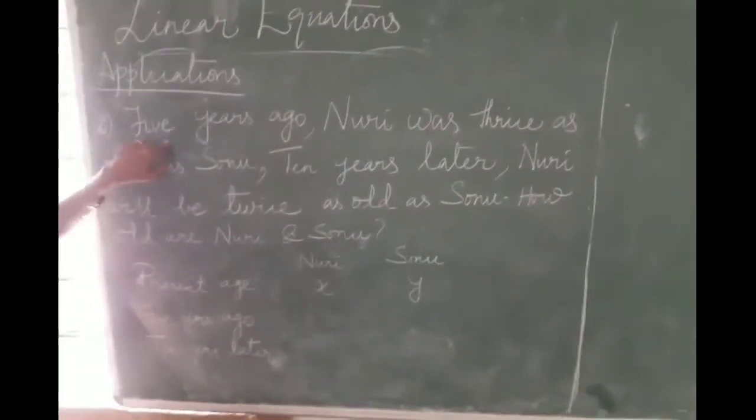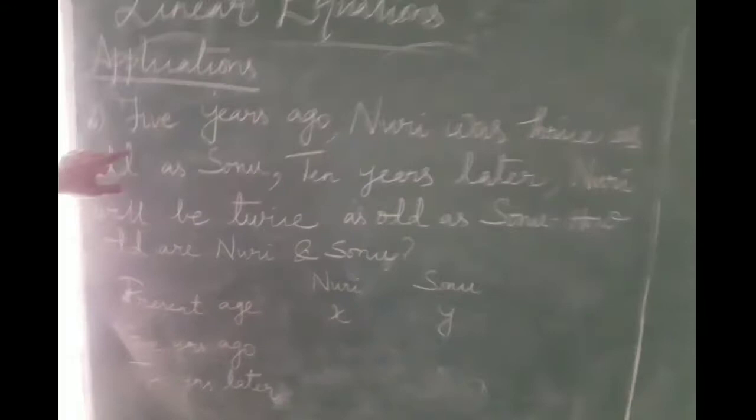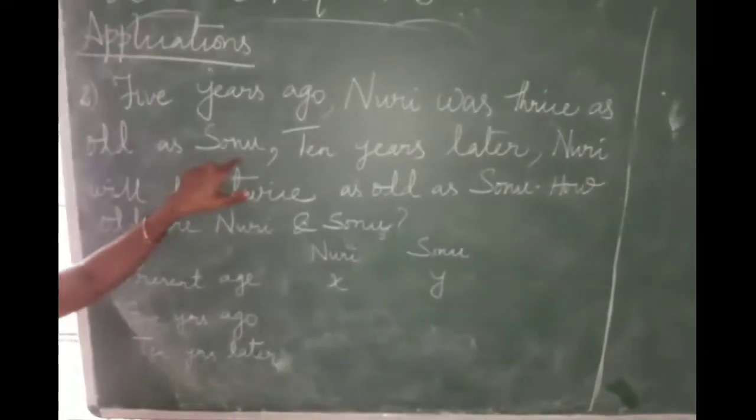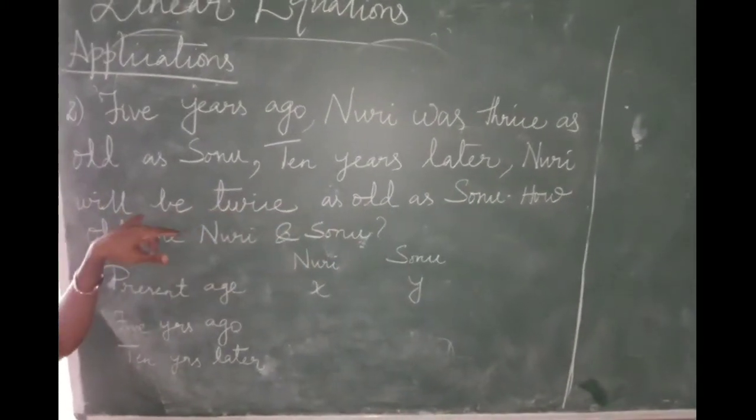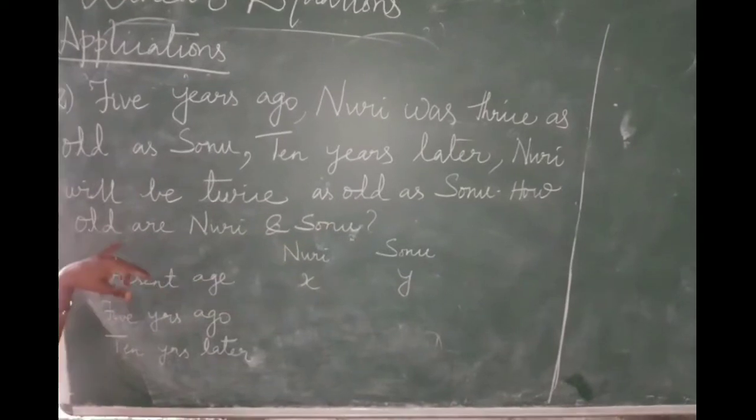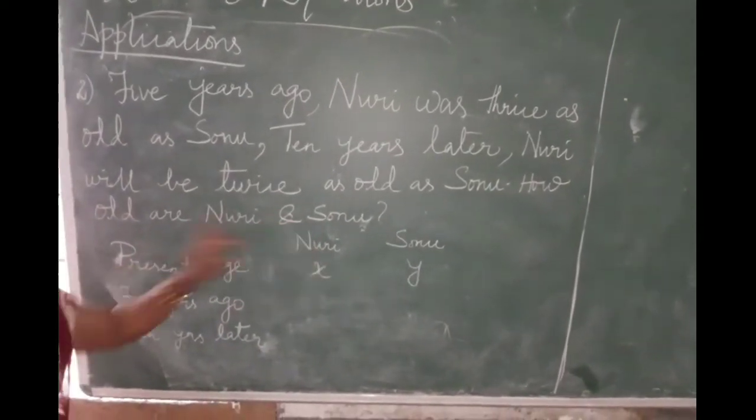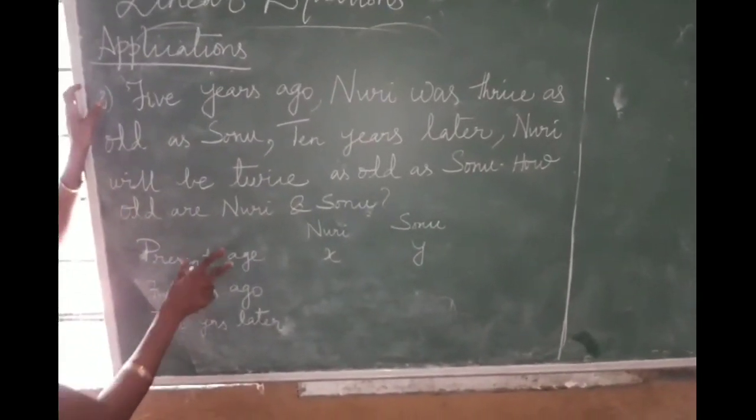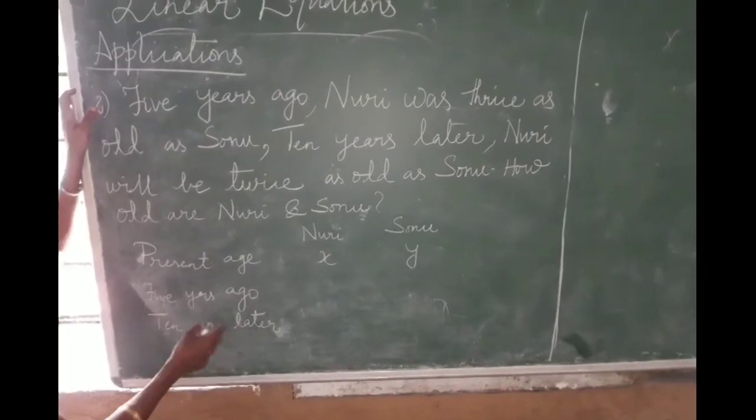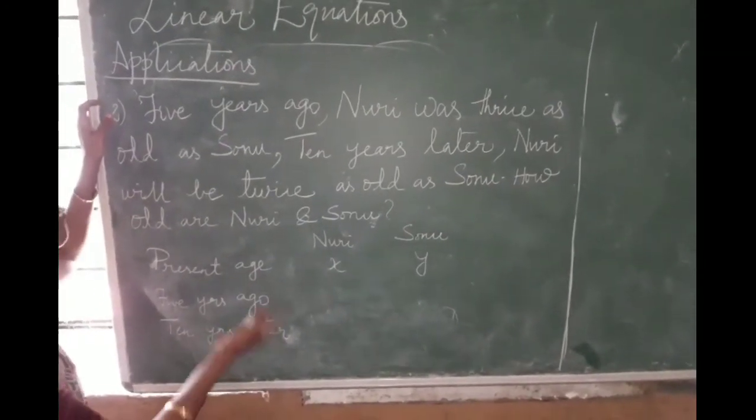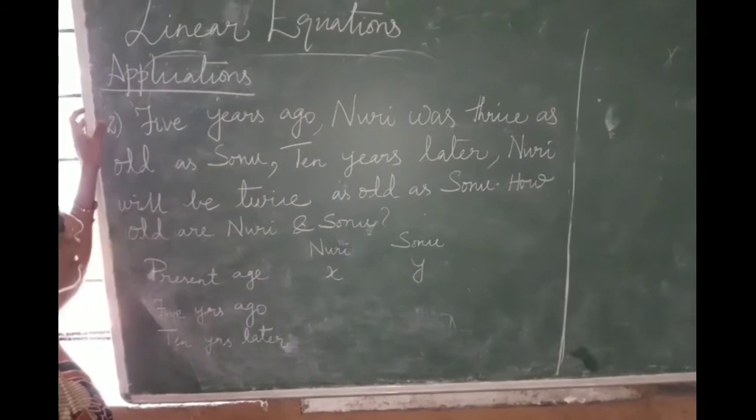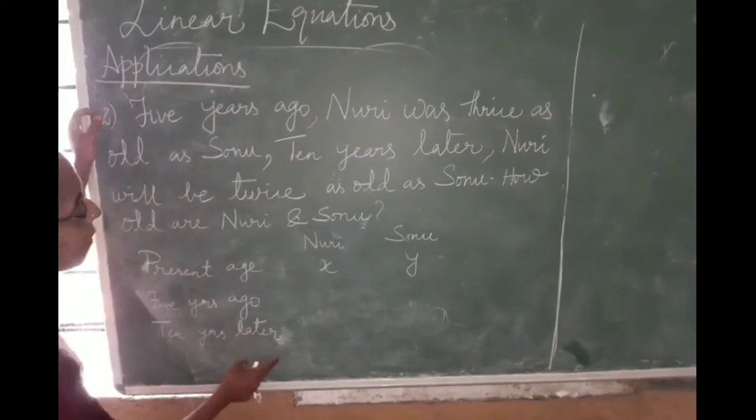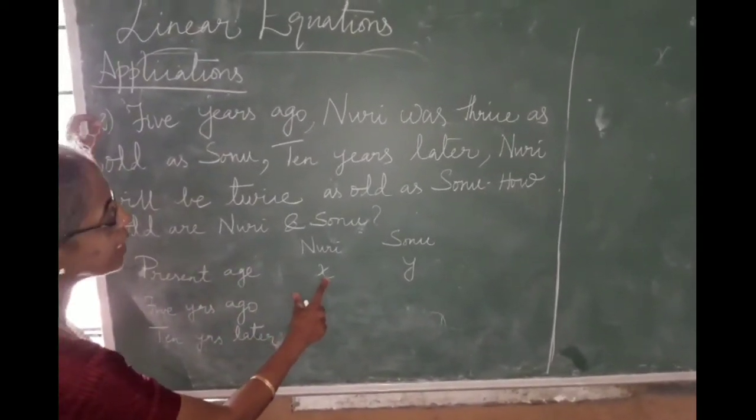Next we are going to see age sum. Previously we have seen fractional sum. Now we are going to see age sum. So here the question is: 5 years ago, Noori was thrice as old as Sonu. 10 years later, Noori will be twice as old as Sonu. How old are Noori and Sonu? So for age sum, as far as possible, you better write what is the present age and then 5 years ago, 10 years later. Here, ago means before, you have to subtract. After, since, hence means you will be adding.